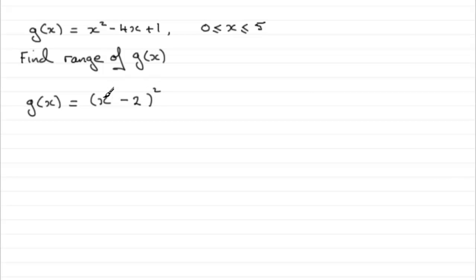The coefficient of x is minus 4, so if we halve that we get minus 2. And if we square this out now we're going to get x squared minus 4x plus 4.